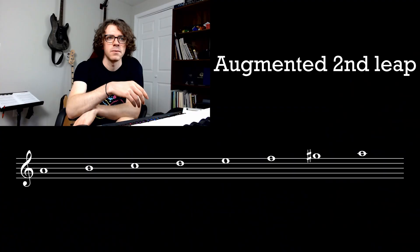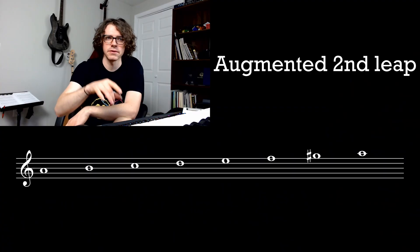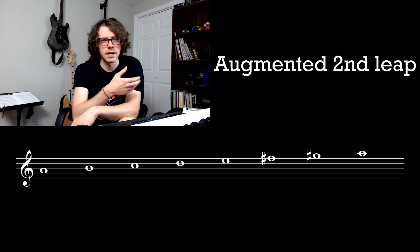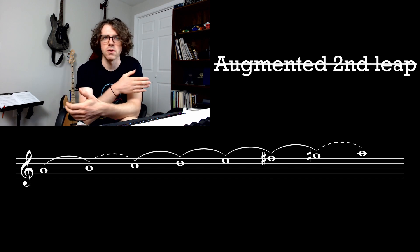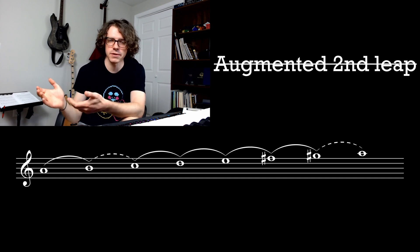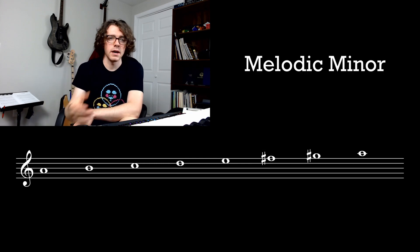However, it introduces a new problem. Listen to the scale played melodically. Raising the seventh results in this big augmented second leap between the sixth and seventh. It sounds very cool, but the problem is it sticks out like a sore thumb and it kind of hogs all the attention — you don't want that all the time. We can fix this by also raising the sixth by a half step. Now we're back to all whole and half steps between each degree of the scale. This is the melodic minor scale.